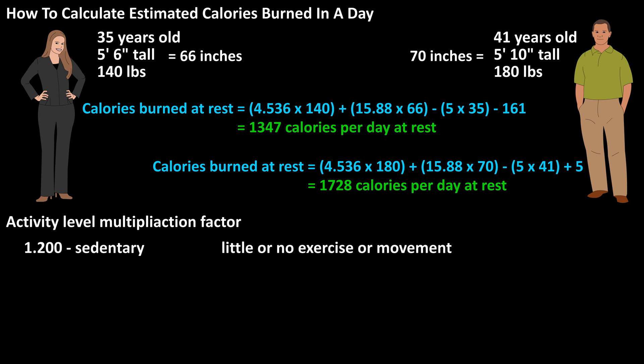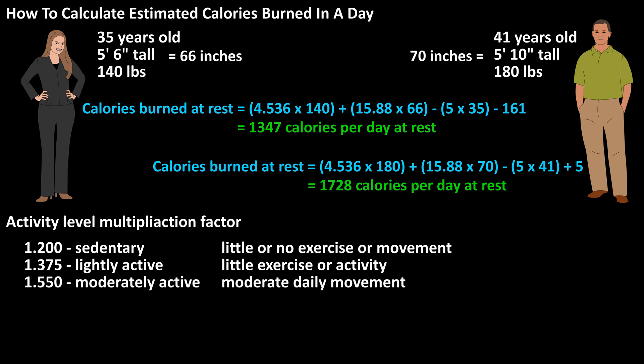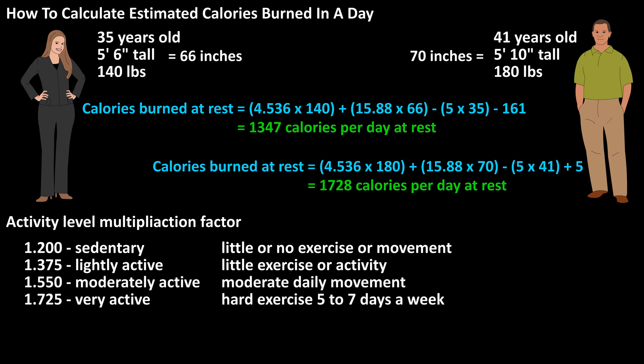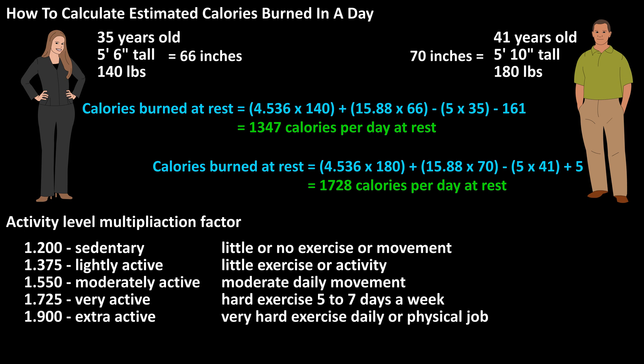1.200 for sedentary persons — so little or no exercise or movement. 1.375 for lightly active, with little exercise or activity. 1.550 for moderately active. 1.725 for very active, meaning hard exercise or sports 5 to 7 days a week. And 1.900 for extra active — very hard exercise every day, or a physically demanding job.